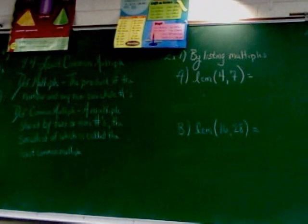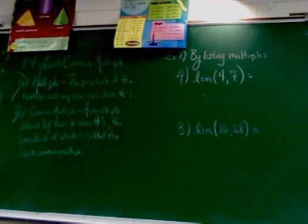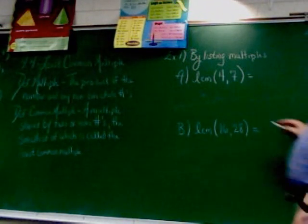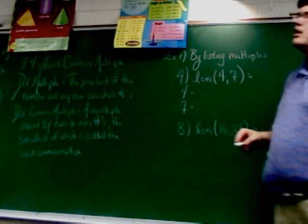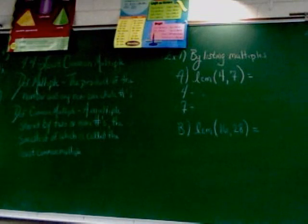All right. So, in part A, we're finding the least common multiple of 4 and 7 by listing multiples. We'll start with the multiples of 4.